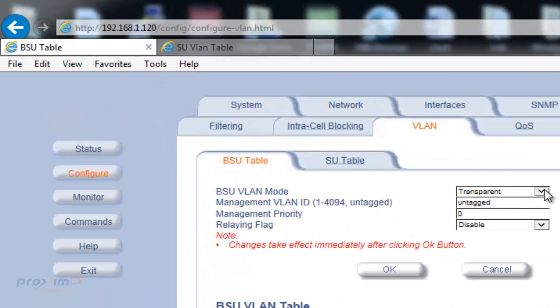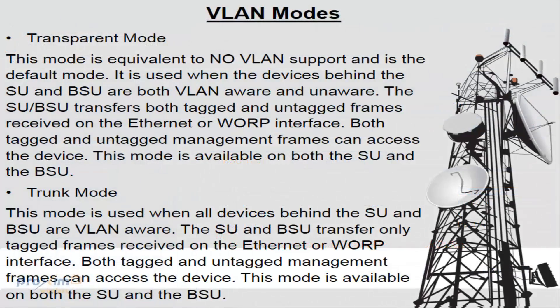The BSU supports three VLAN modes: transparent, trunk, and mixed. The 5054 series supports the following VLAN modes. Transparent mode is equivalent to no VLAN support and is the default mode. It is used when the devices behind the SU and BSU are both VLAN aware and unaware. The BSU and SU transfer both tagged and untagged frames received on the Ethernet or Warp interface. Both tagged and untagged management frames can access the device. This mode is available on both the SU and the BSU.